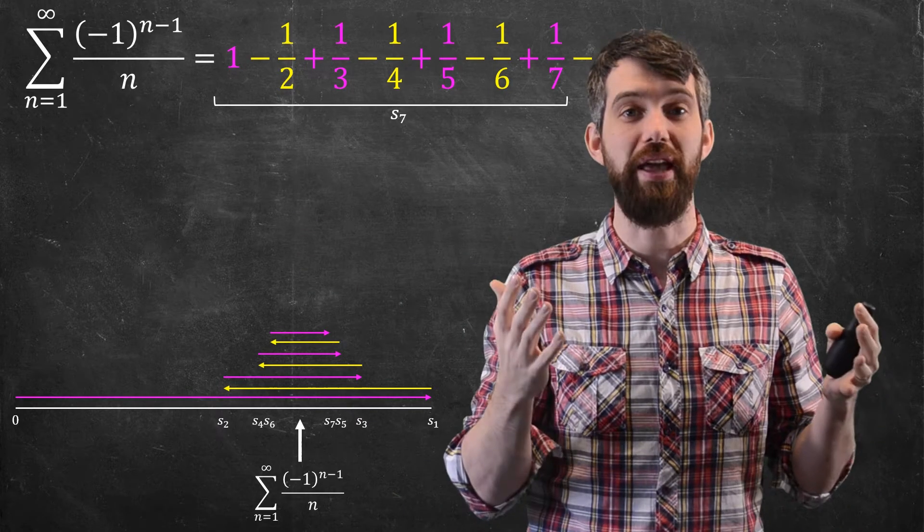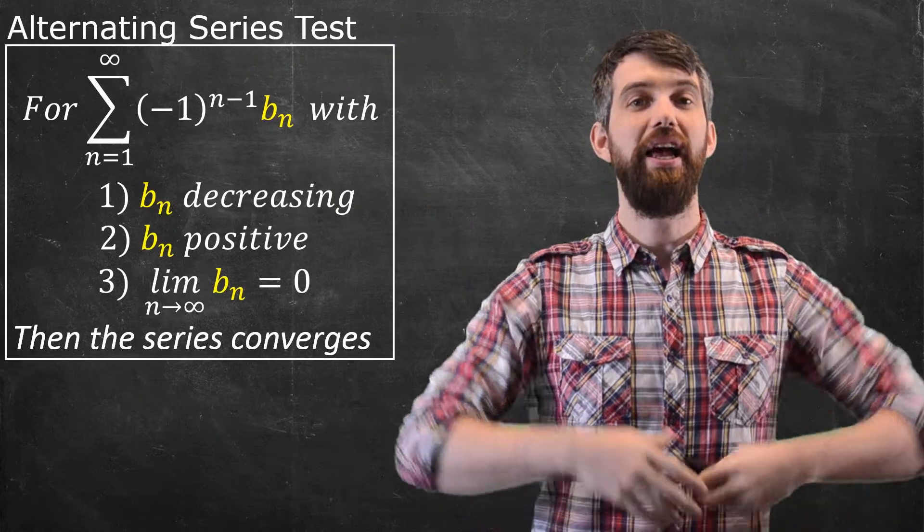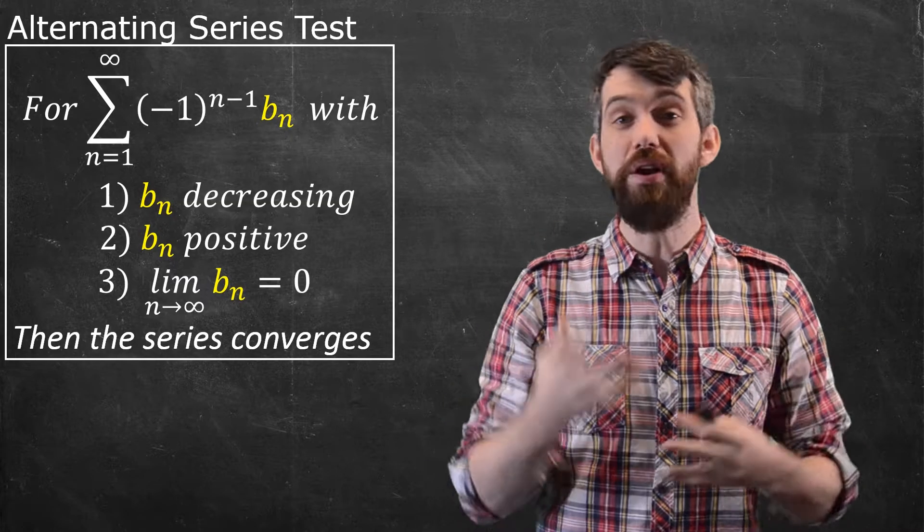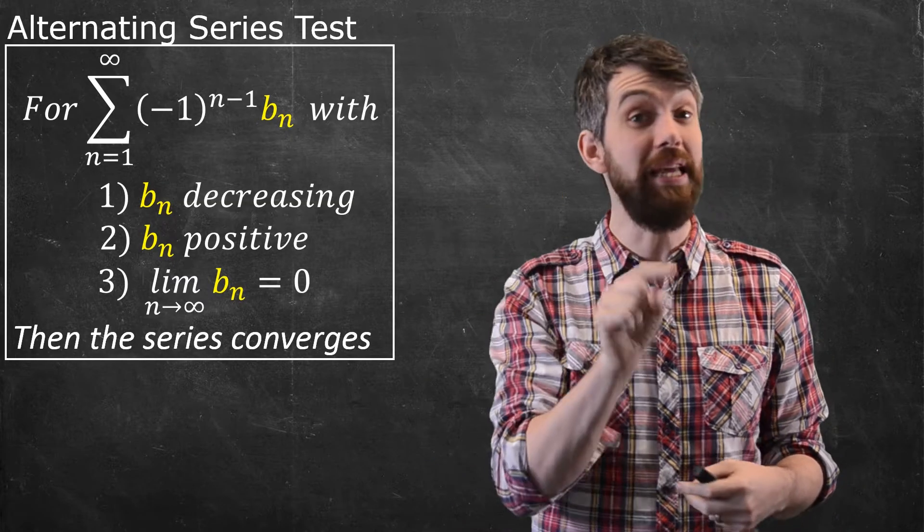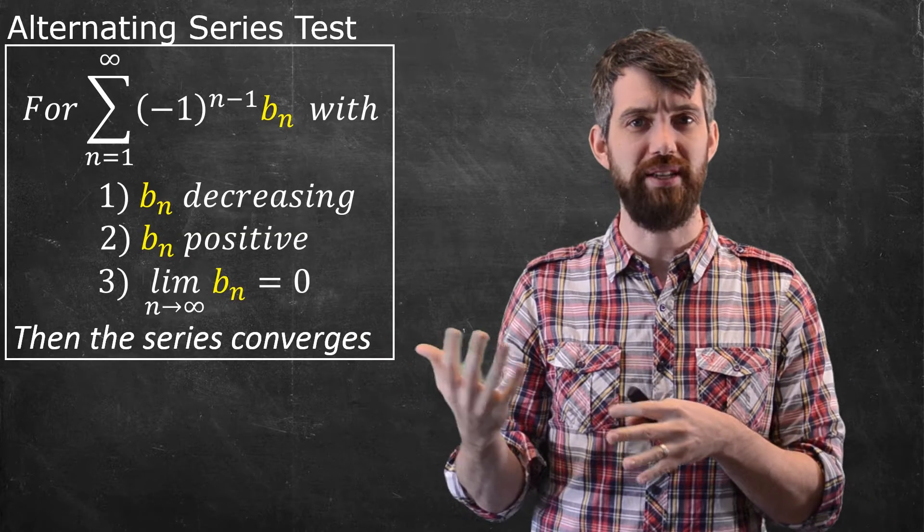Let's formalize this idea into a theorem. The alternating series test says: if I begin with an alternating series, (-1)^(n-1) times b_n for some sequence b_n that looks like it did for the harmonic series,